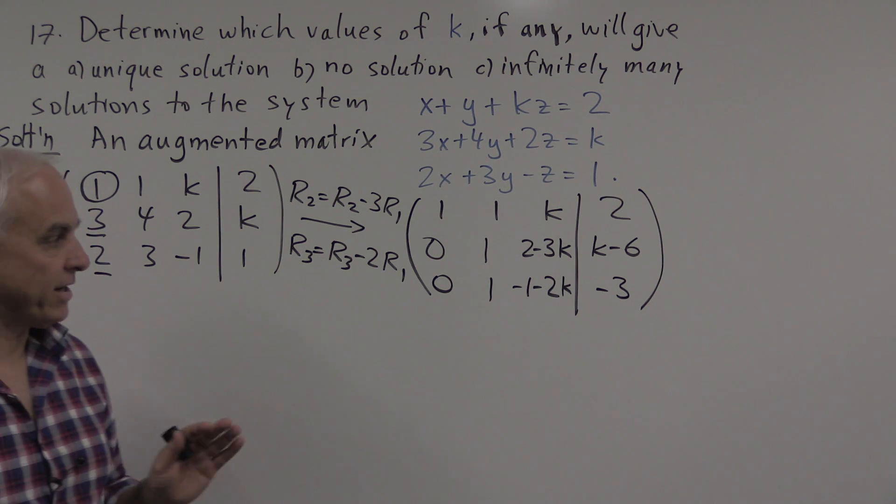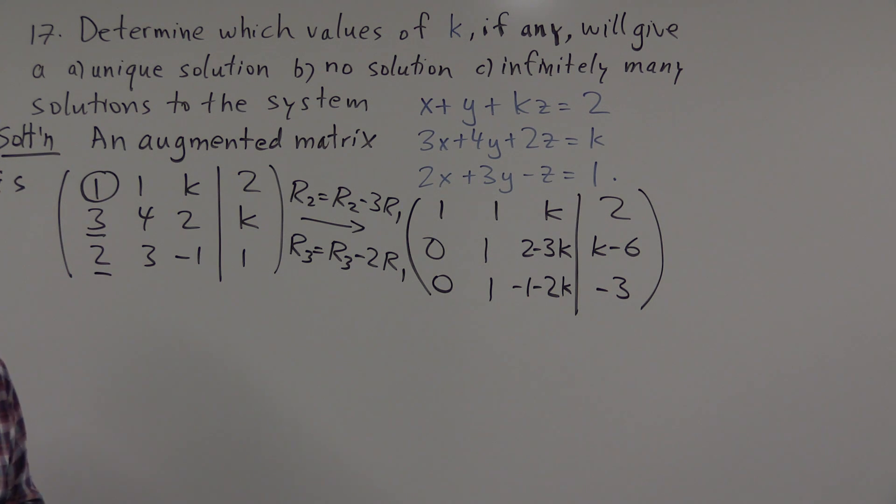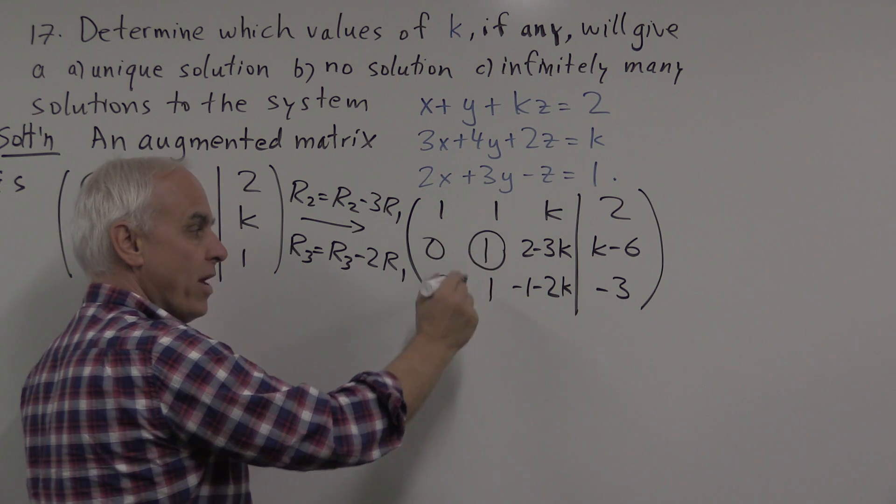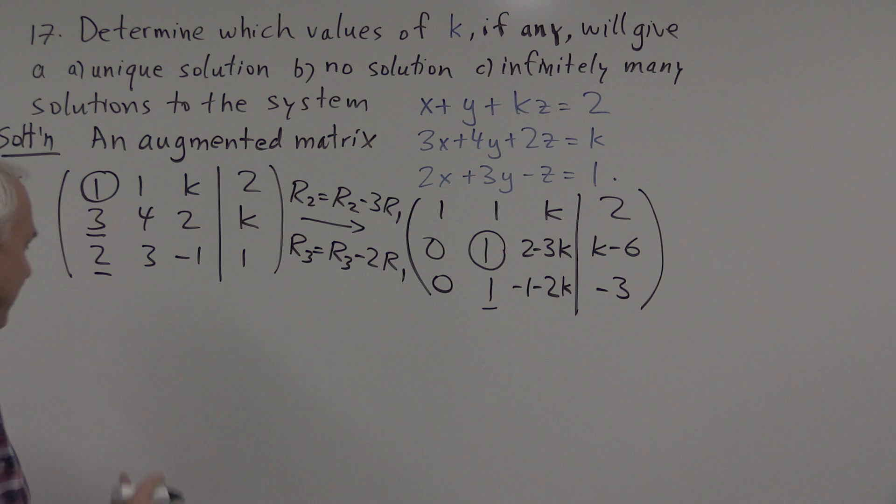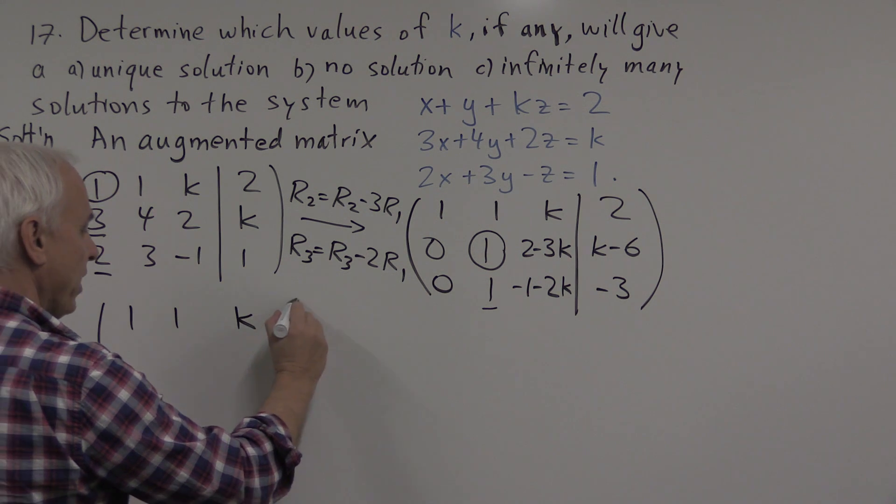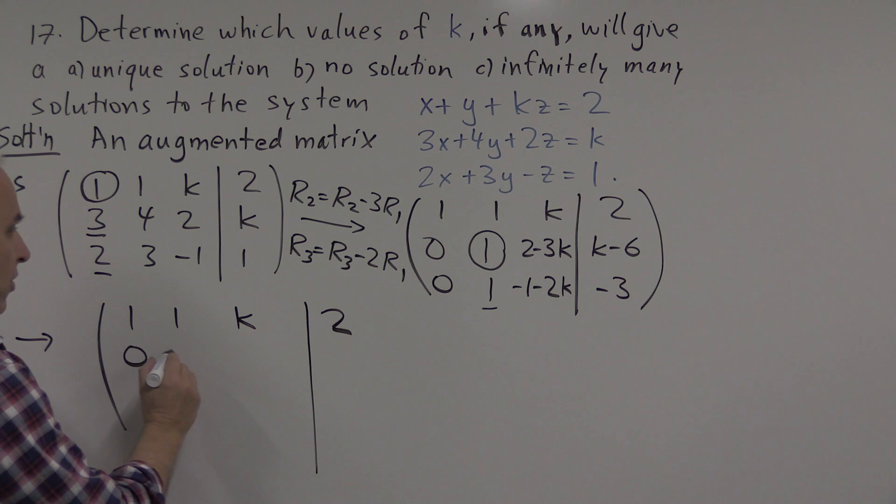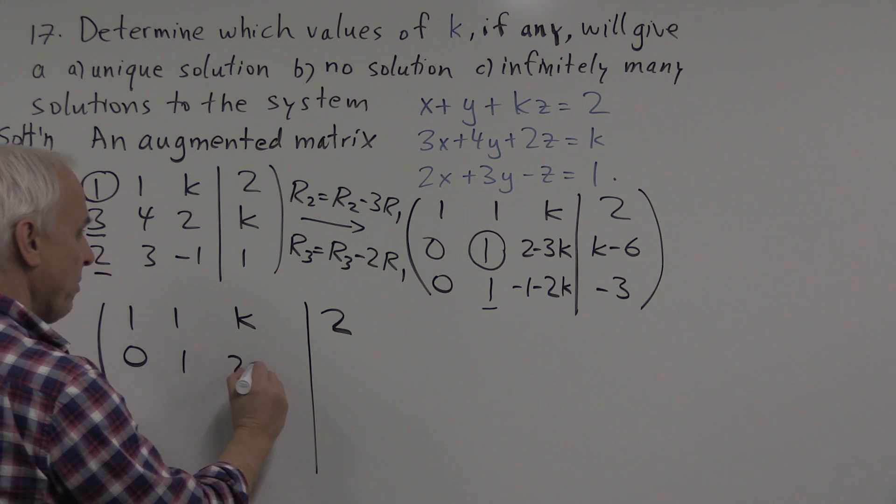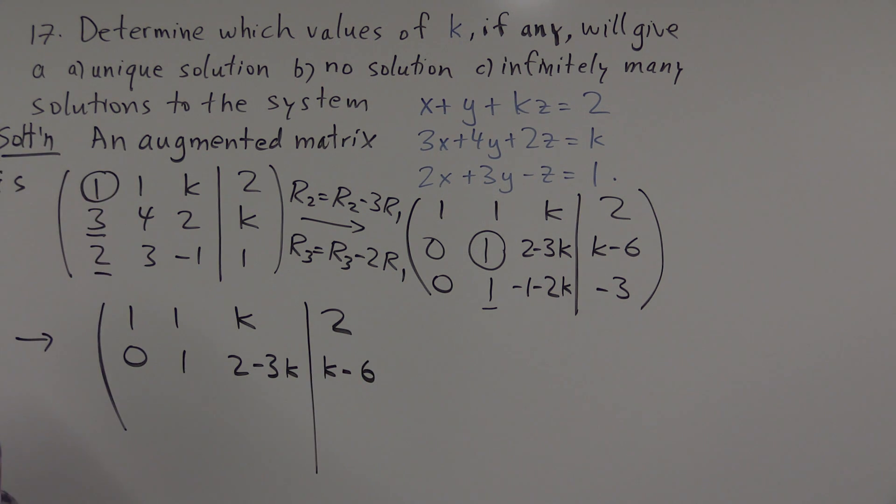It's a little bit complicated now because there's this k involved instead of numbers, but we're still going to proceed with our row reduction. At our next step, we take this 1 as our pivot entry, and we're going to eliminate the 1 below it. We're going to have 1, 1, k, 2, and 0, 1, and here we have 2 minus 3k, and k minus 6.